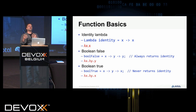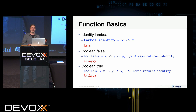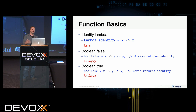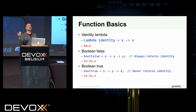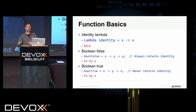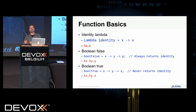We need representations of Boolean values — true and false. Boolean false is a Lambda expression which returns another Lambda expression, and the one it returns is identity. So false will always return identity. True is logically the opposite of false, so we have a Lambda expression which returns a Lambda expression that is not identity. True will always return a Lambda expression which is not identity.